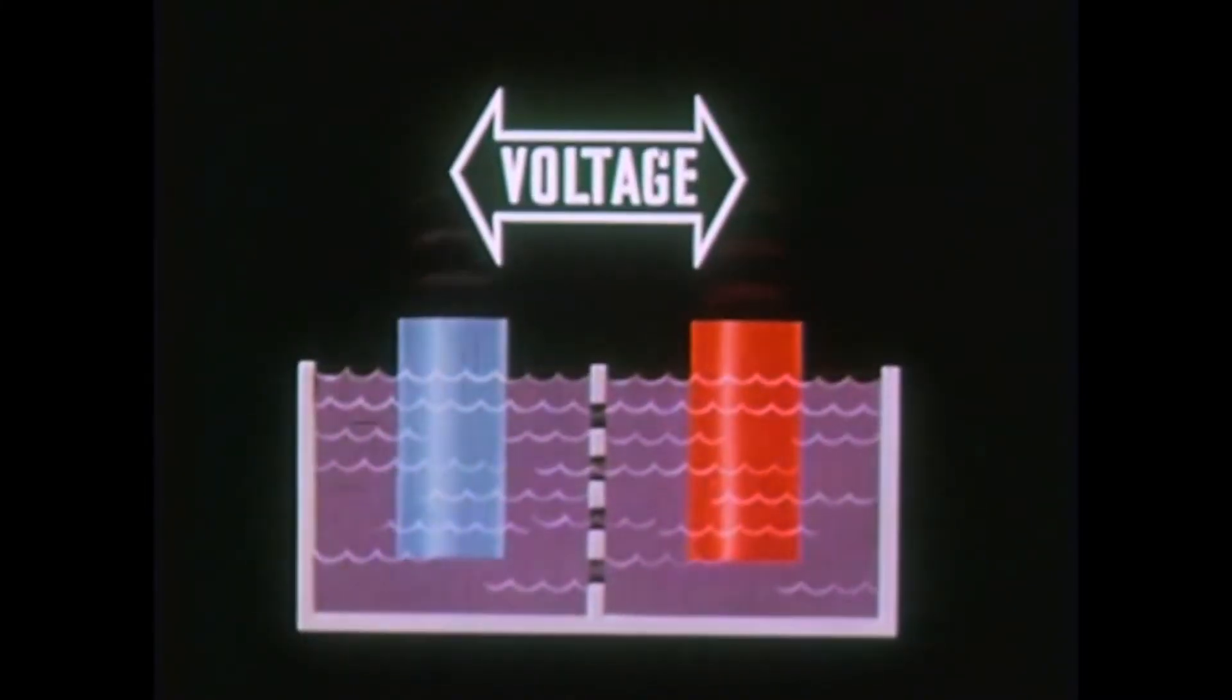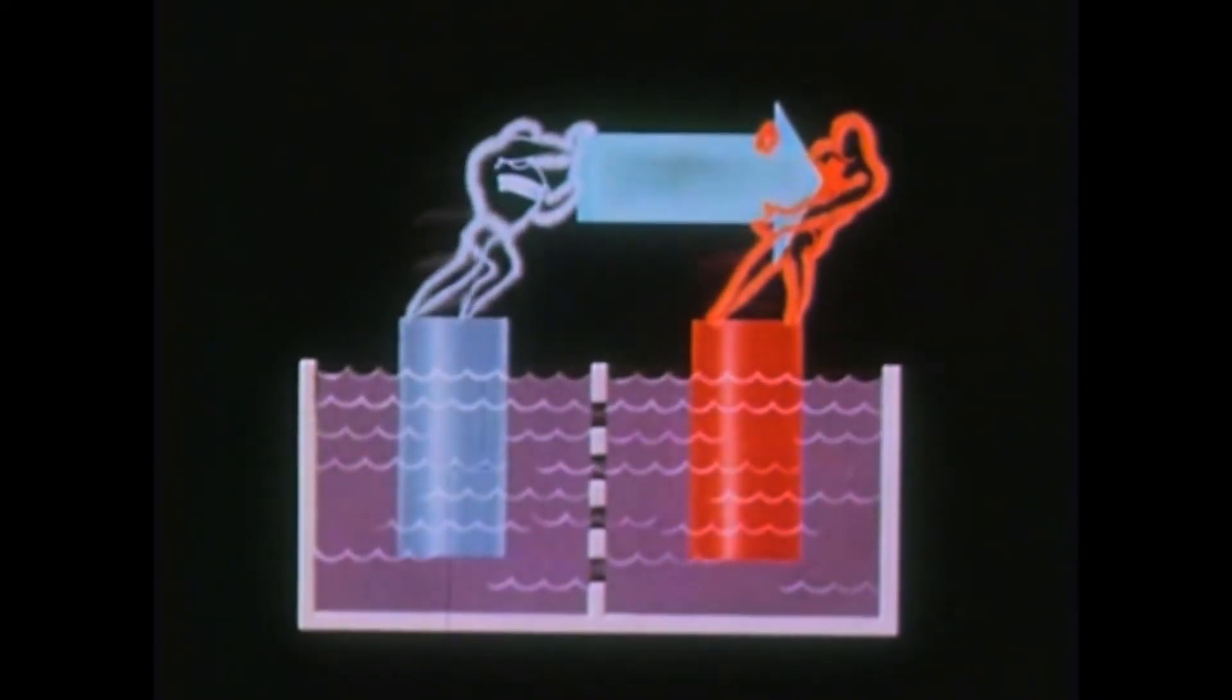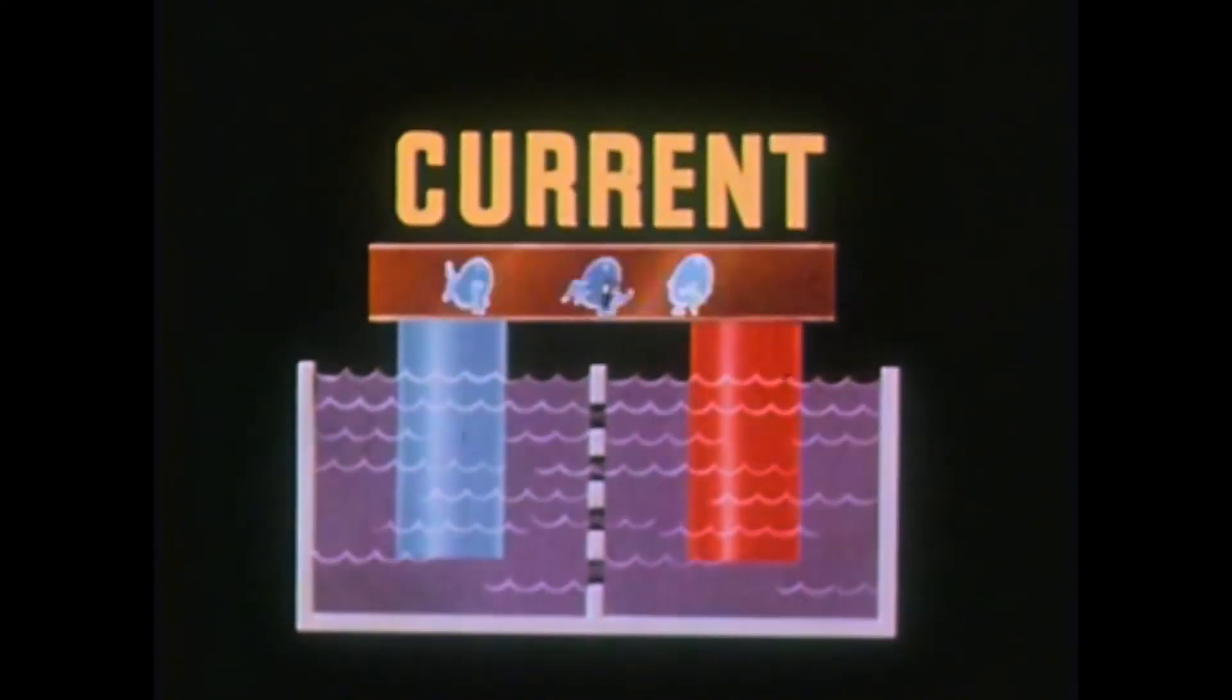The electrons always try to get from a negatively charged body to one that is positively charged in relation to it. And if they are brought together, the electrons will flow from one to the other until both objects are equally charged.